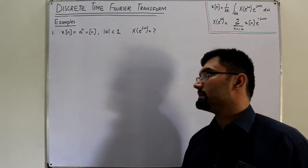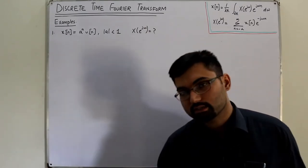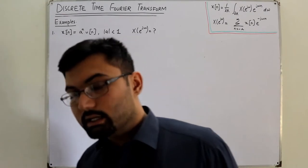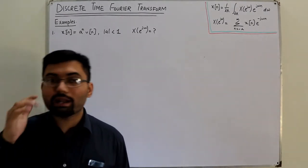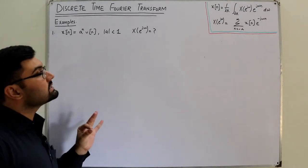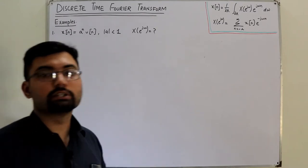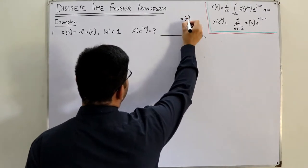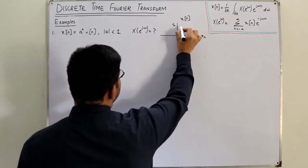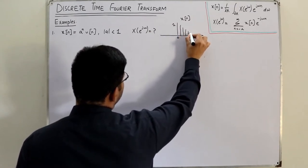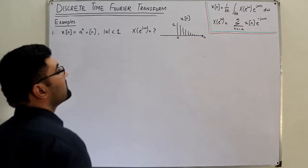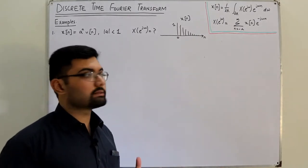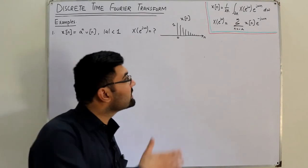If you look at the signal: since we have u(n), the left-hand side is zero. We have something to the power n, so it's an exponential signal. Since |a| < 1, it is a decaying exponential. The other significance of |a| < 1 is that the signal converges — meaning the signal is converging. If this condition were not given, the signal would diverge, and the summation would not converge, so we would be unable to find the Fourier transform through the analysis equation.